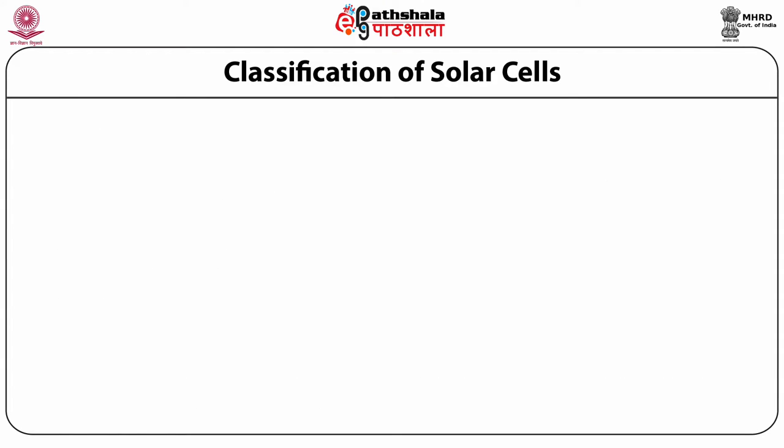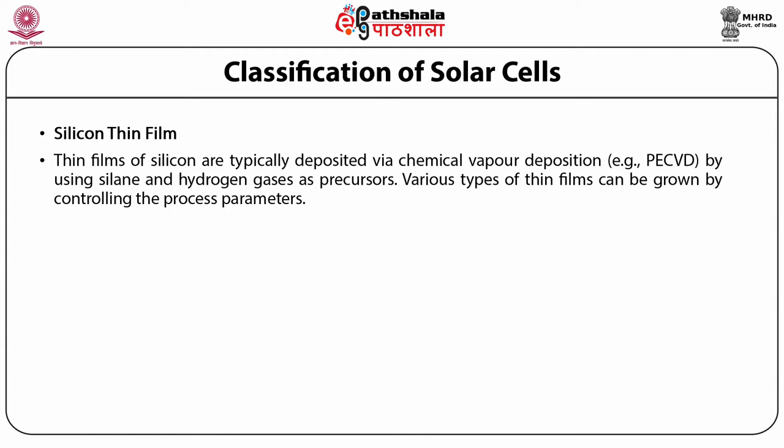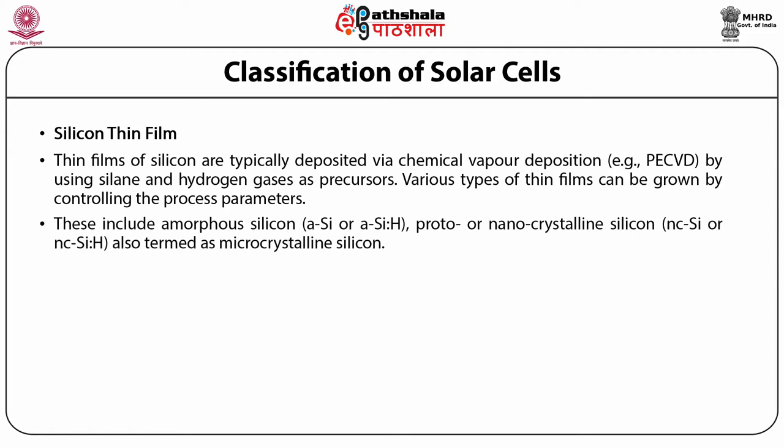Let us now discuss silicon thin film. Thin films of silicon are typically deposited via chemical vapor deposition, e.g. PECVD, by using silane and hydrogen gases as precursors. Various types of thin films can be grown by controlling the process parameters. These include amorphous silicon (a-Si), proto or nanocrystalline silicon, also termed as microcrystalline silicon.